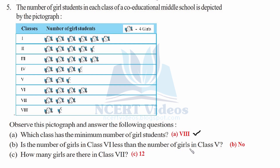Part B: is the number of girls in class 6 less than the number of girls in class 5? Comparing class 6 and class 5, class 6 actually has more girls than class 5. So the answer is No — class 6 does not have fewer girls than class 5.